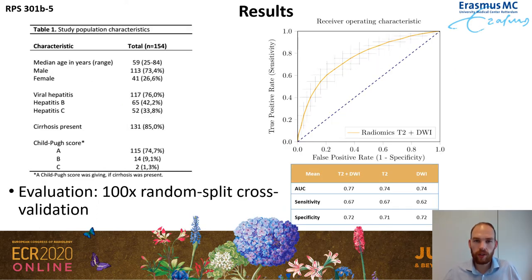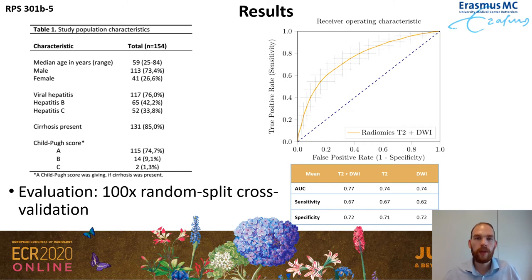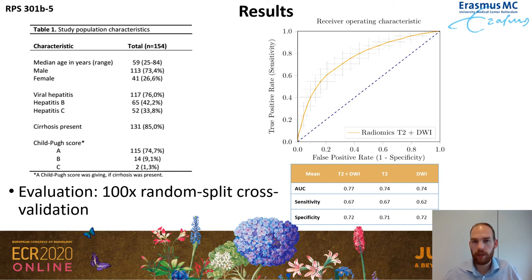Let's take a look at some of the results. On the left I've included a table with some clinical characteristics of the patients. In the radiomics experiments I used a 100-times random split cross-validation to ensure we train and test on different parts of the dataset. On the top right you can see the ROC curve of the model when using the T2 and diffusion-weighted imaging, and you can see that the model performs quite a bit better than simply guessing. From the table you can see what happens when we only use T2 or DWI, and performance drops a little bit.